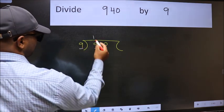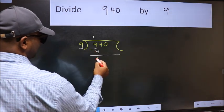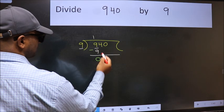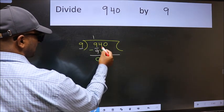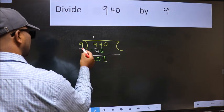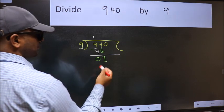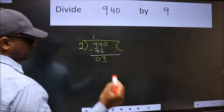9 times 1 is 9. Now we should subtract, we get 0. After this, bring down the next number, so 4 comes down. Now here we have 4 and here 9. 4 is smaller than 9, so we should bring down the second number.